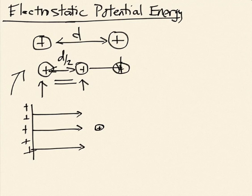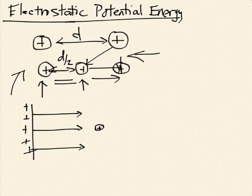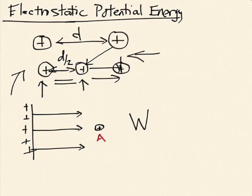When I move the charge closer, I'm going to have to do work to do that. To move this charge from here to here, I had to expend energy because the charge doesn't want to get any closer. I can get that energy back if I let it go and it moves off to the right, releasing energy as kinetic energy. So let's calculate the work I have to do to move the particle. I'm going to calculate the work that the electric field does on the particle as it moves from point A to point B against the electric field.